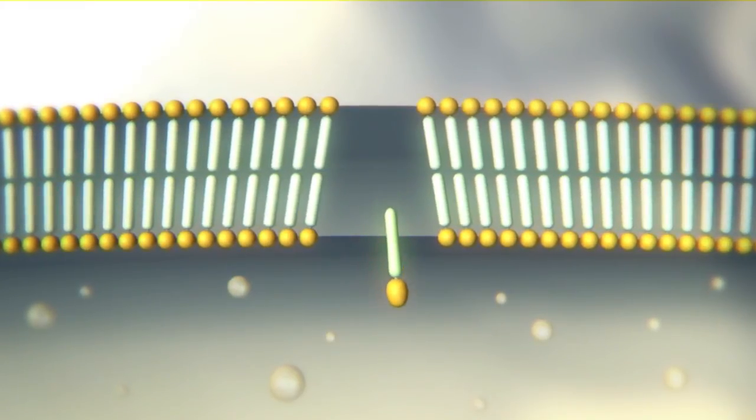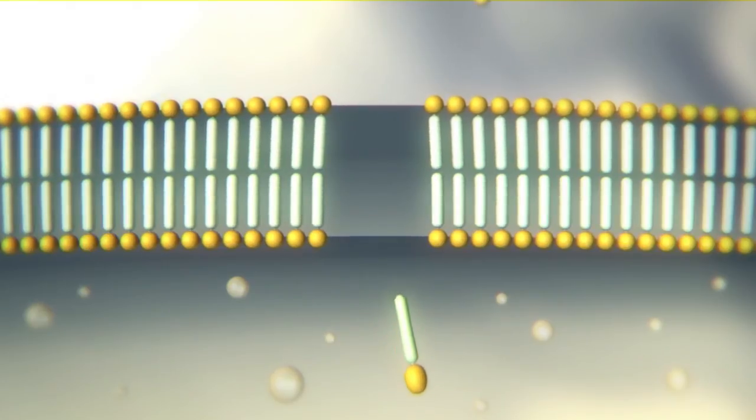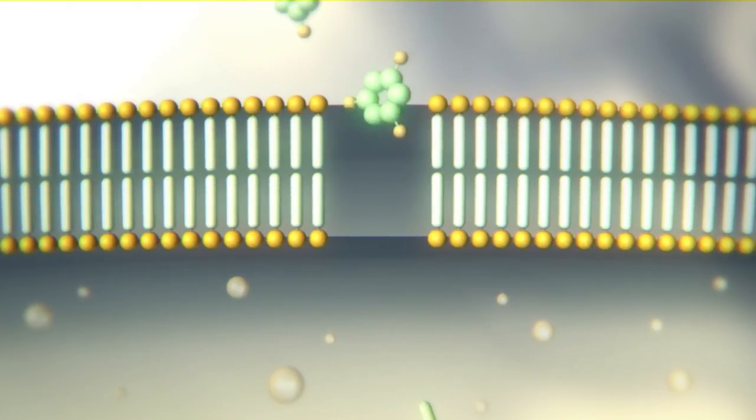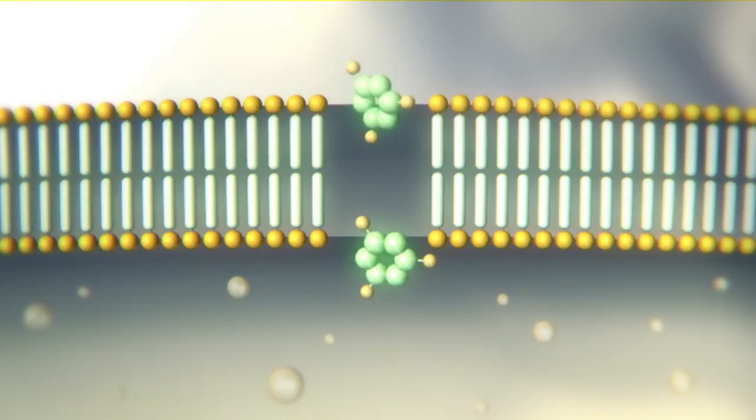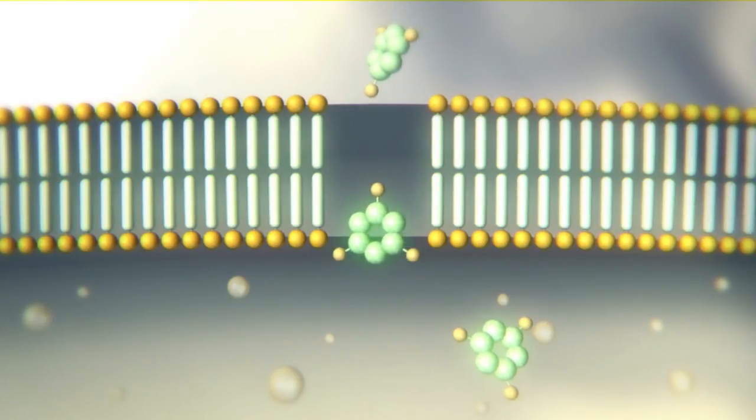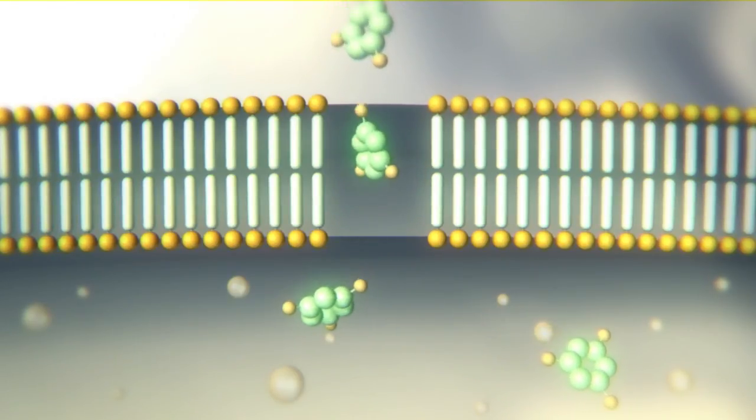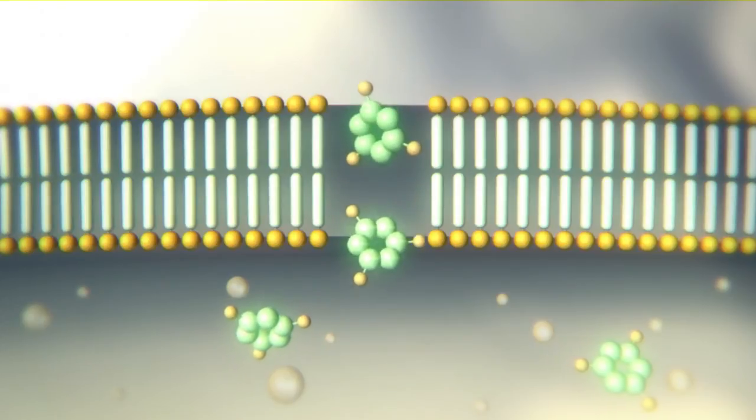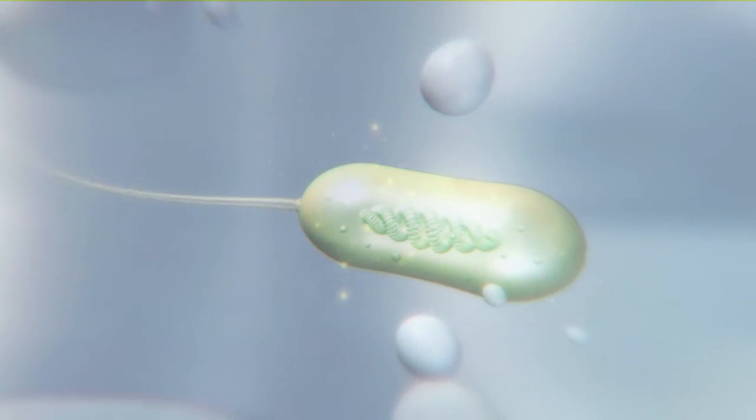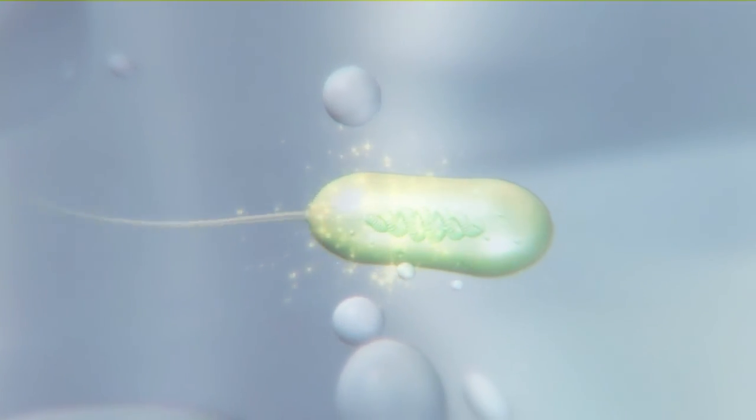The cell membrane then becomes permeable to the antimicrobial active agents, and the preservatives such as aromatic alcohols or organic acids can now penetrate more easily through the cell walls of the bacteria. After entering the cell, they attack its vital structures and the cell dies.